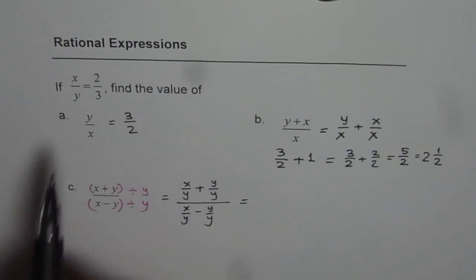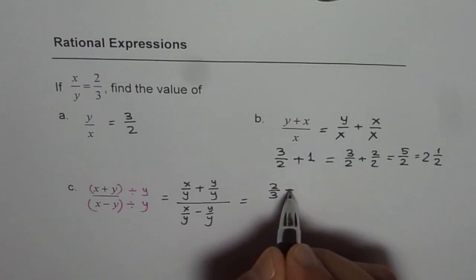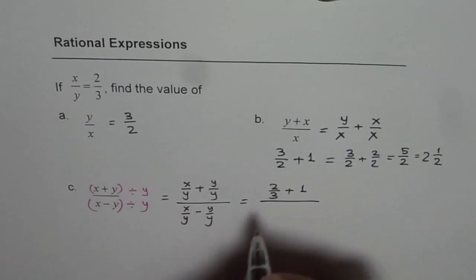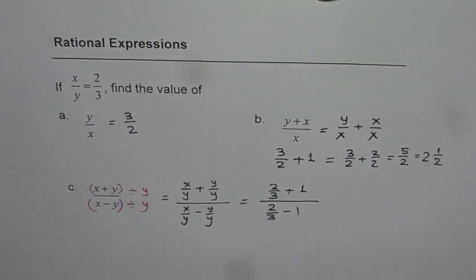Yes, x over y is known to us as 2 over 3. So we can write this as 2 over 3 plus y over y, which is 1, divided by x over y, which is 2 over 3, minus 1. Now it becomes simpler.